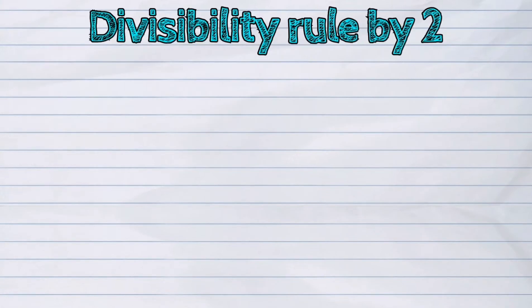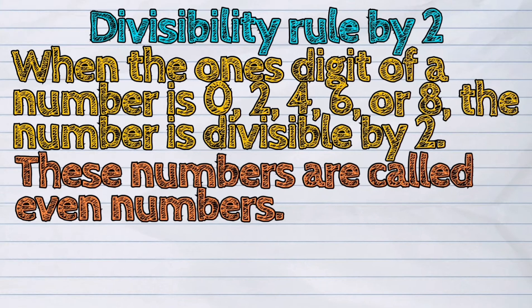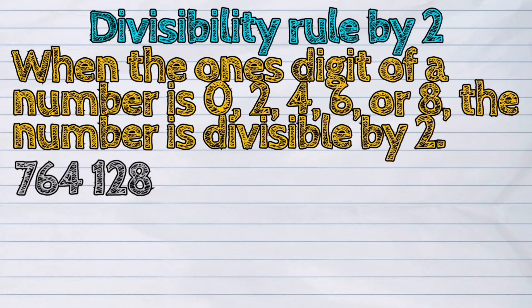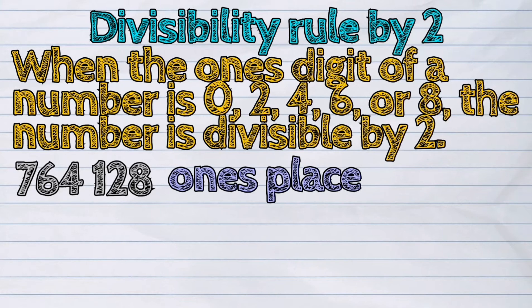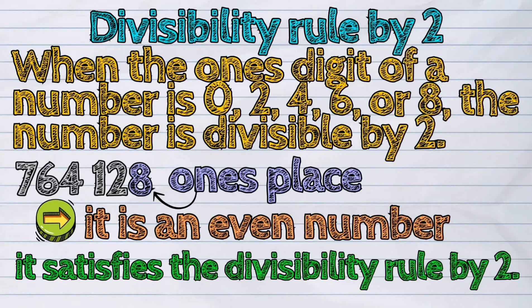Let's start with the divisibility rule by two. When the one's digit of a number is zero, two, four, six, or eight, the number is divisible by two. These numbers are called even numbers. For example, in 764,128, the number in the one's place is eight. Eight is an even number, so it satisfies the divisibility rule by two.